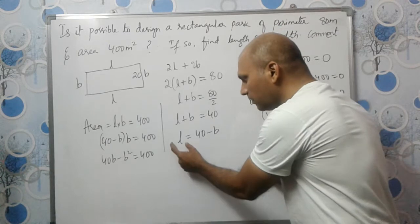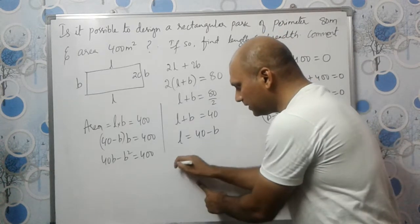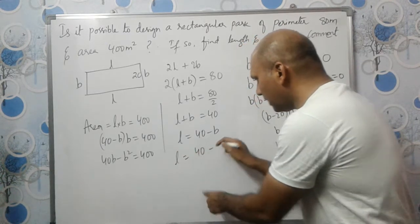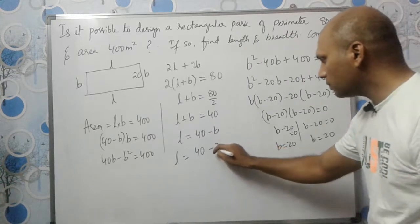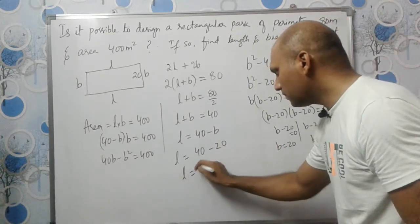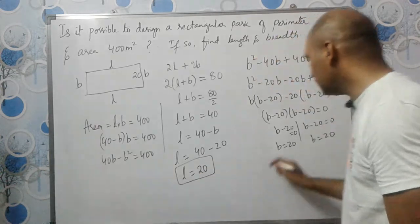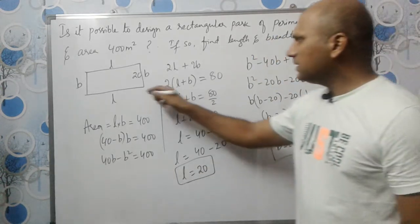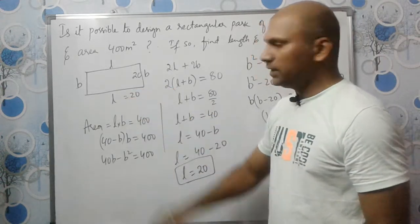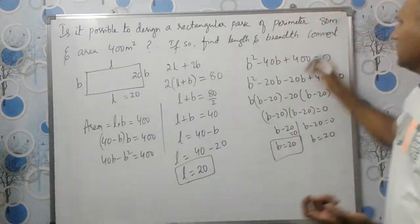How should we find the value of L, length? Length is 40-B. B is 20, so 40-20 is also equal to 20. Both length and breadth are 20 each.